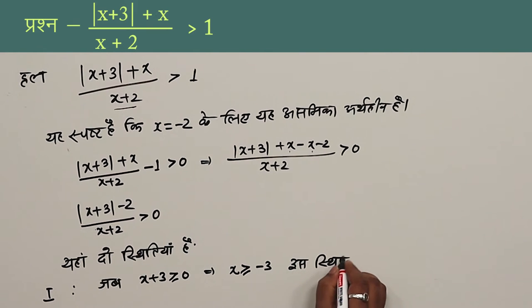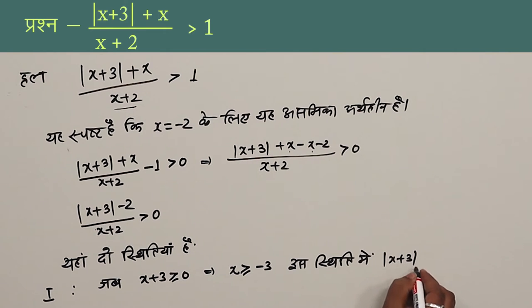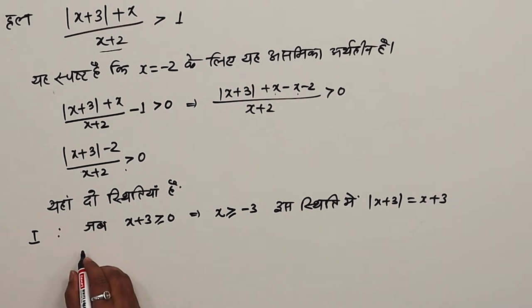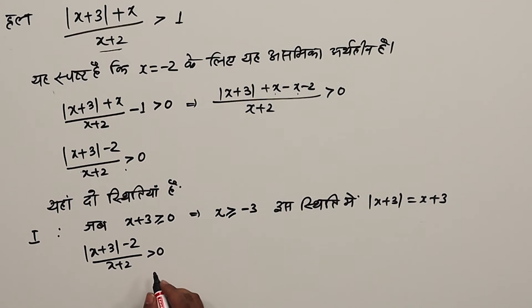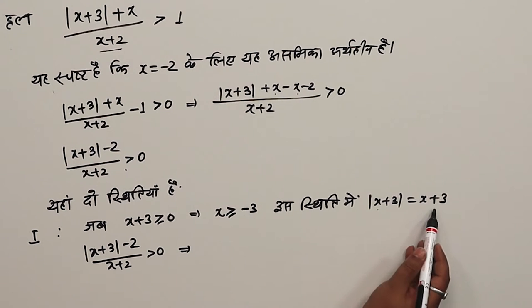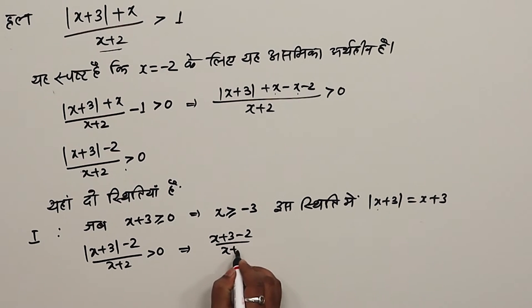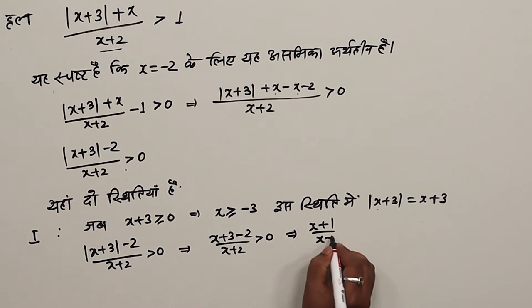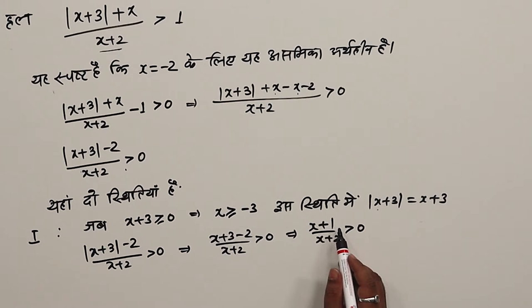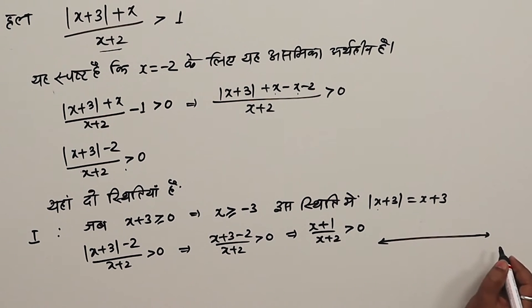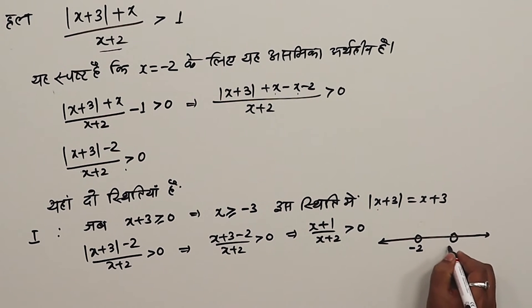In this case, mod of (x+3) equals (x+3). We also note that x+2 must not equal 0, so x cannot equal minus 2. This value gives us x equal to minus 2, and we note the value minus 1 as well.